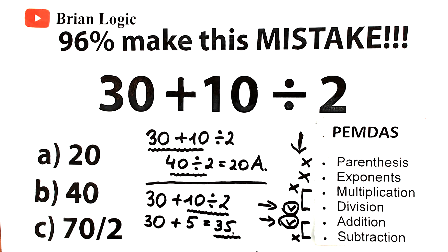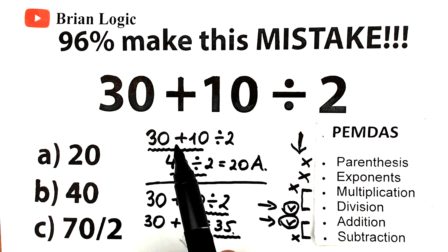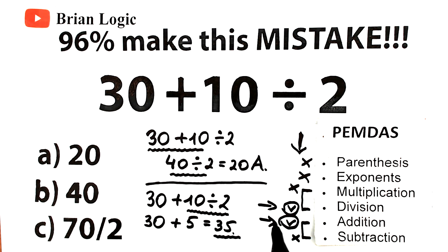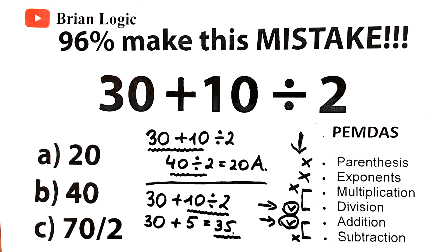This is a really important moment: one approach gave us 20, and the other gave us 35. The correct answer is 35. Why is 20 incorrect? Because that approach started with addition and then did division. According to PEMDAS and the order of operations, division is always before addition — division is always before subtraction — so the multiplication and division group always comes before the addition and subtraction group. Always think: multiplication and division first, then addition and subtraction as the final step.